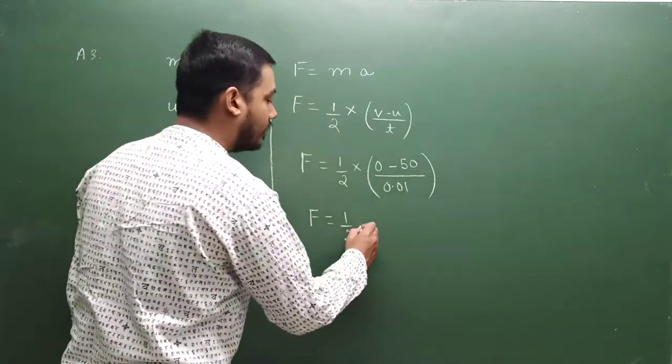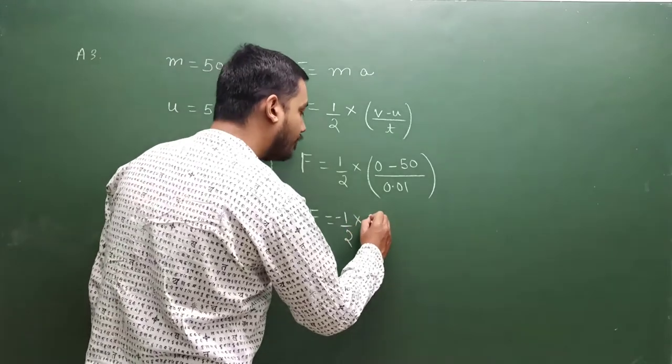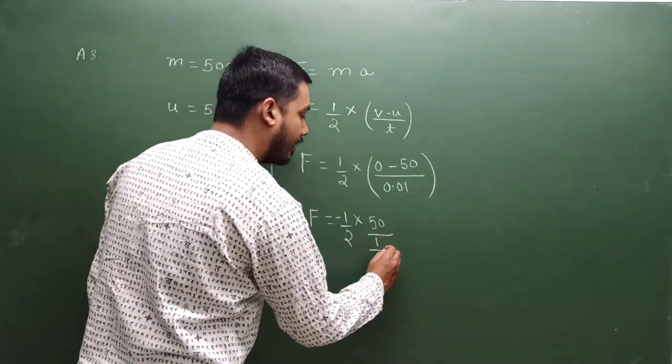Half of 0 minus something is, yeh minus bahar aa jaega, into 50. Yeh ho jayega 1 by 100, hai na, ho jayega.